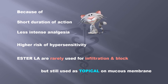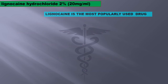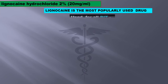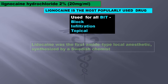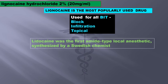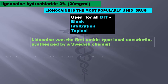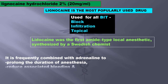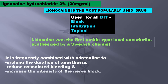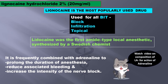Moving on to amides now. Lignocaine is the most popularly used drug for all — that is block, infiltration, and topical. It was the first amide-type local anesthetic to be synthesized, done by a Swedish chemist. It is frequently combined with adrenalin to prolong the duration of anesthesia, reduce associated bleeding, and increase the intensity of the nerve block.